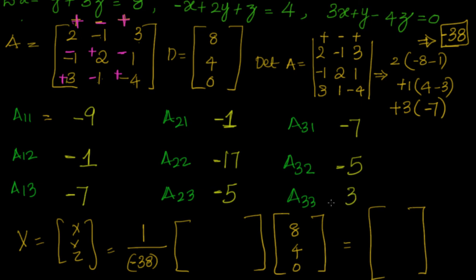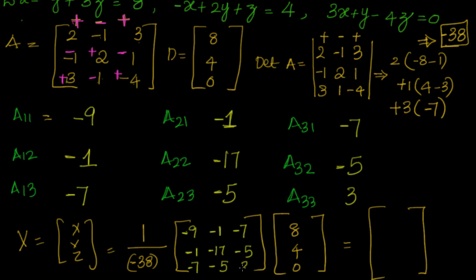The sign for A33 is plus, so that is confirmed as 3. The full cofactor matrix is: row 1: minus 9, minus 1, minus 7; row 2: minus 1, minus 17, minus 5; row 3: minus 7, minus 5, 3.